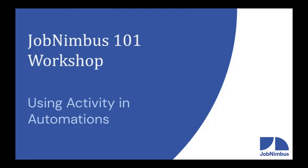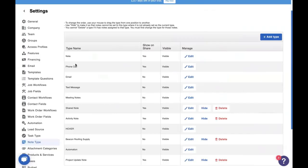Hello everyone, and welcome to our Job Nimbus 101 workshop today. This is the fourth of our five-week series on automations in Job Nimbus. Today we'll be talking about automations using activity as a trigger record, which can do some pretty fascinating things. My name's Logan, and I'm Dan. Job Nimbus keeps track of a lot of activity in your account for you, so why not use that to trigger some automations?